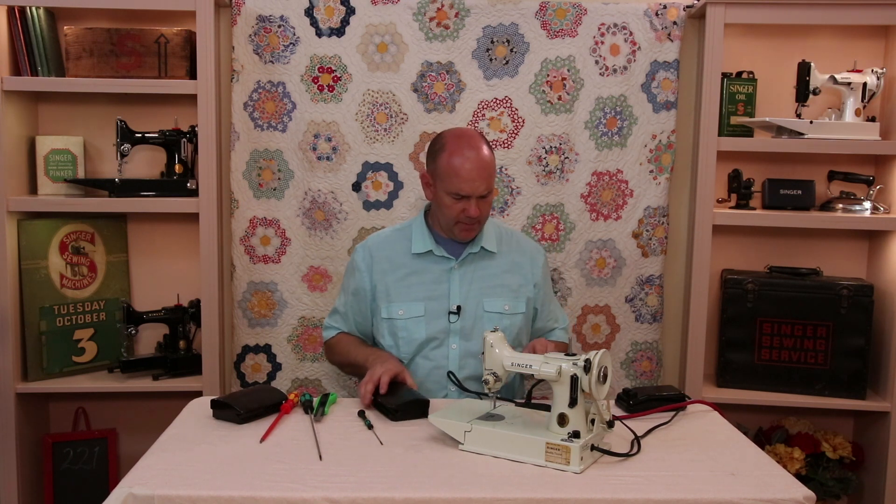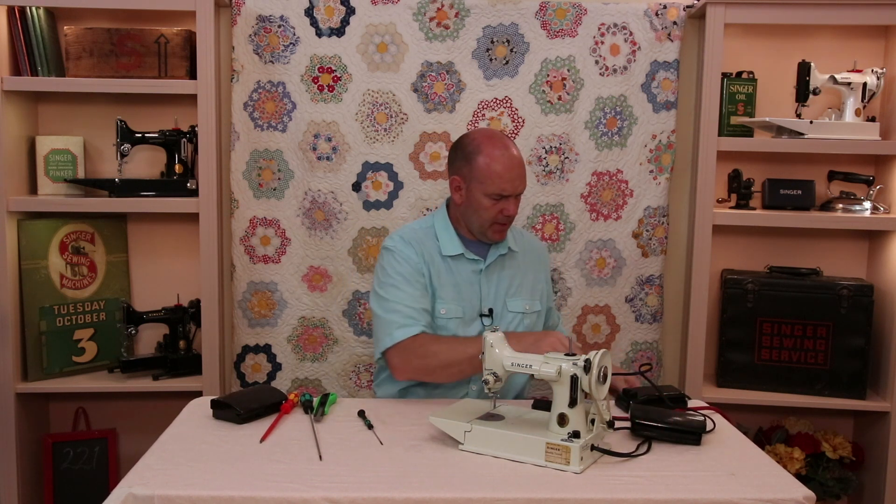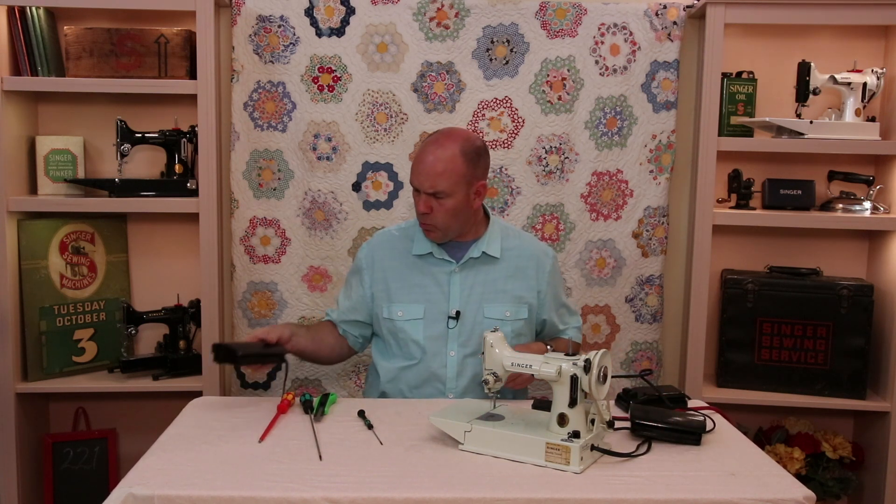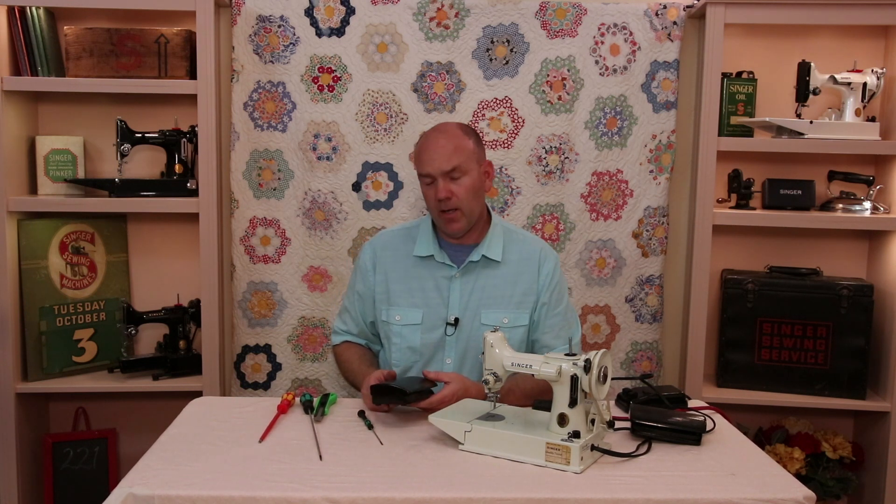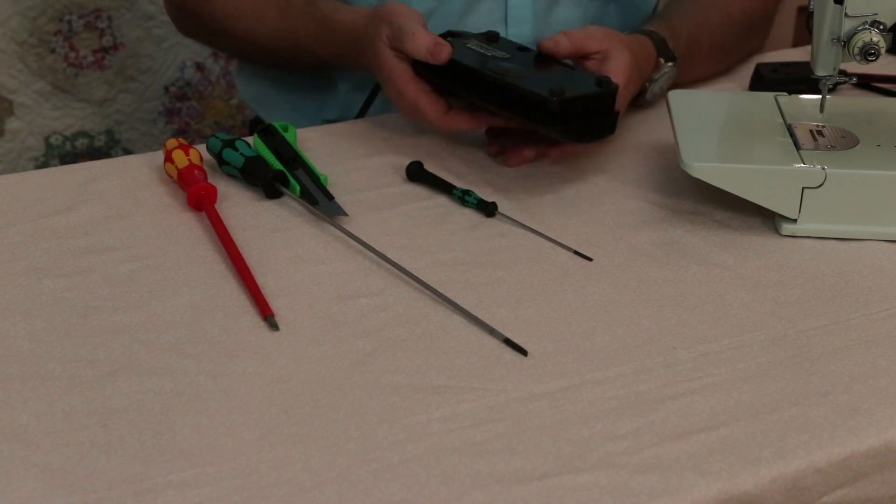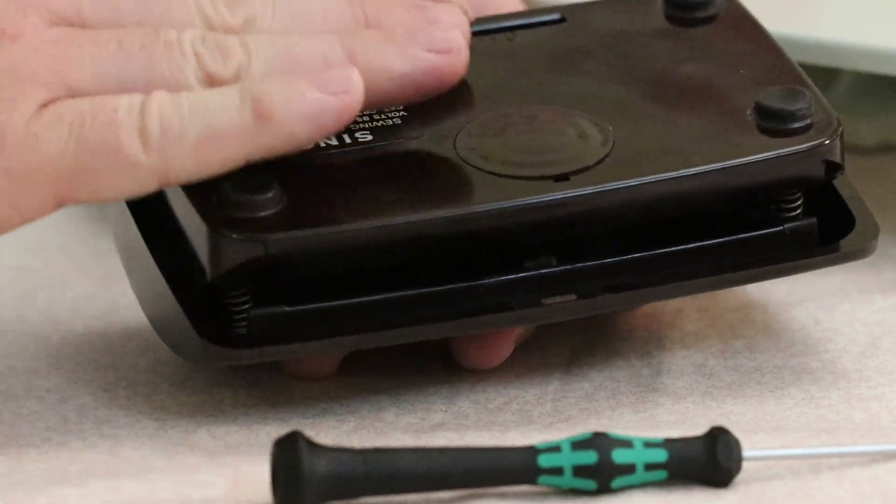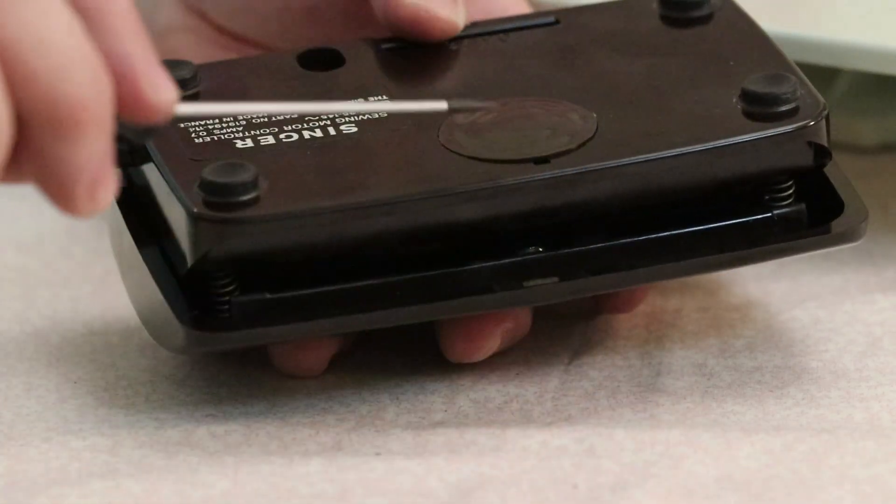But I want to show you one more thing. We're going to unplug this one. There's another controller that came on some of the 220 volt featherweights and then also on many of your other older singers as well. And these were often brown like this one's kind of a dark brown. Now instead of this foamy stuff on the bottom this has a little plug.